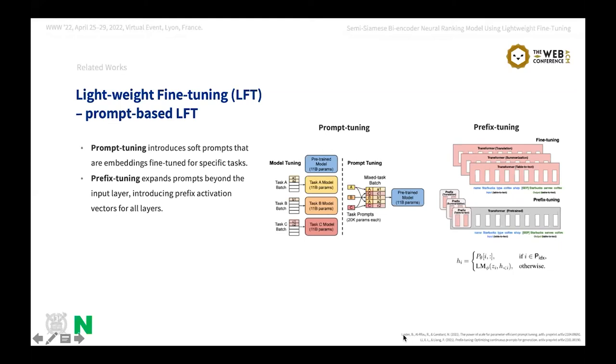Prompt-based lightweight fine tuning inserts artificial embeddings next to the original input embeddings. Prompt tuning inserts prompts next to the word embeddings, and prefix tuning prepends the prefix vectors to each layer's representation. As prompt tuning introduces new parameters equivalent to word embeddings only, the performance is not good enough for information retrieval, at least in our experiments. On the other hand, prefix tuning introduces more parameters and intervenes in each layer's representations. Therefore, the performance was a lot better than prompt tuning. Among them, we mainly adopt prefix tuning for our semi-Siamese bi-encoder model.